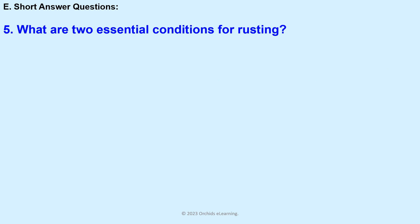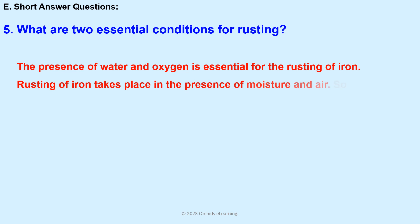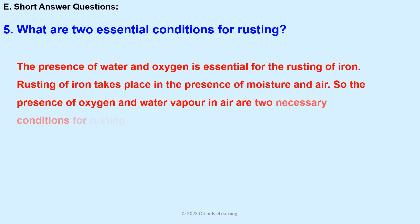What are the two essential conditions for rusting? The presence of water and oxygen is essential for the rusting of iron. Rusting of iron takes place in the presence of moisture and air. So the presence of oxygen and water vapor in air are the two necessary conditions for rusting of iron.